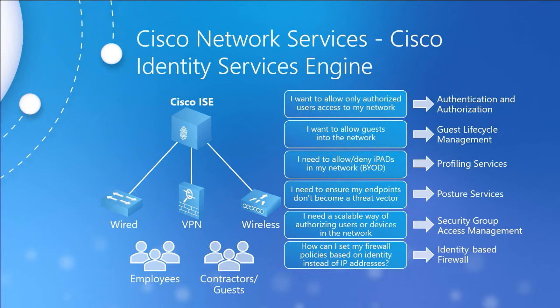ISE is applicable to wired and wireless networks as well as VPNs. It also gathers information and statistics that are viewable via Prime Infrastructure, so the two talk to each other. Key features are real-time visibility and control over users and devices, compliance from consistent policy creation and enforcement, efficiency from streamlined automation and service delivery, and enablement to support new initiatives with policy-enabled services. Similar to Prime Infrastructure, this is deployable as either a physical appliance or a virtual one.